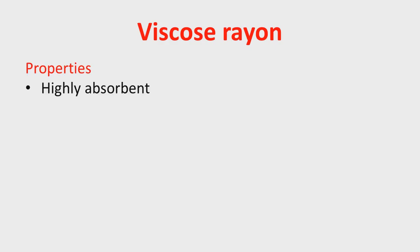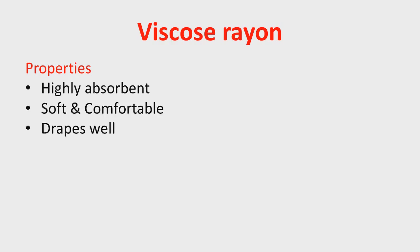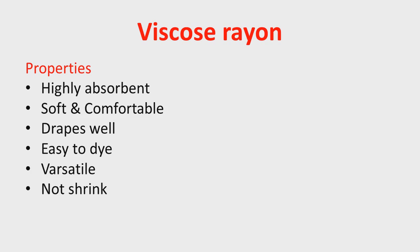Viscose rayon is highly absorbent in nature, meaning it is easily soaked in water. It is very soft and comfortable, and therefore easy to drape well. Viscose rayon is easy to dye and versatile in nature. It does not shrink when heated. Most importantly, viscose rayon is biodegradable in nature, and is therefore used in dresses, lining, and in manufacturing jackets and coats.